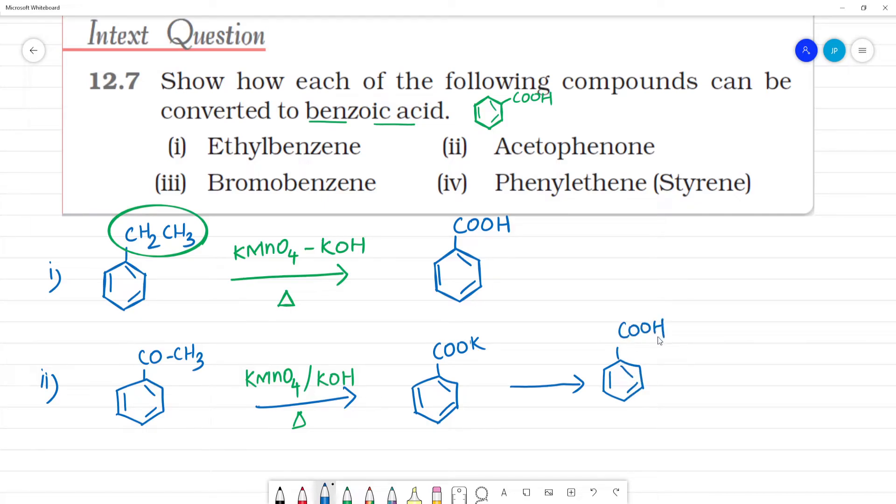COOH. This is acid hydrolysis. H3O plus another. H2O. In presence of acid. Acid hydrolysis, we will be getting benzoic acid. Clear?